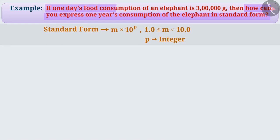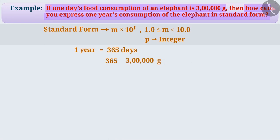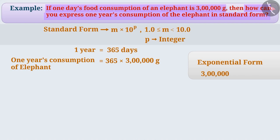In one day, the elephant consumes 3 lakh gram. We know that there are 365 days in a year. So, we will multiply 365 and 3 lakh gram. One year's consumption of the elephant is equal to 365 into 3 lakh gram. We can write 3 lakh as 3 into 10 to the power of 5 in exponential form.